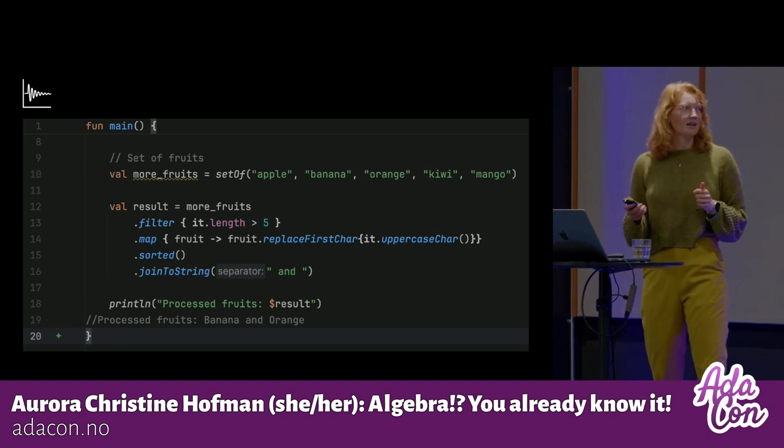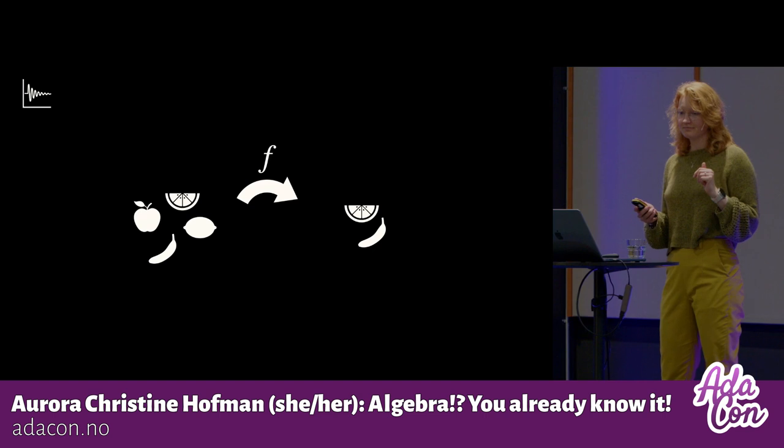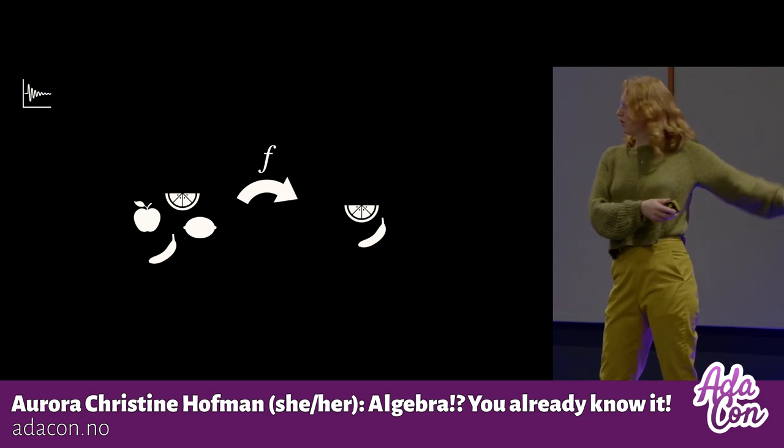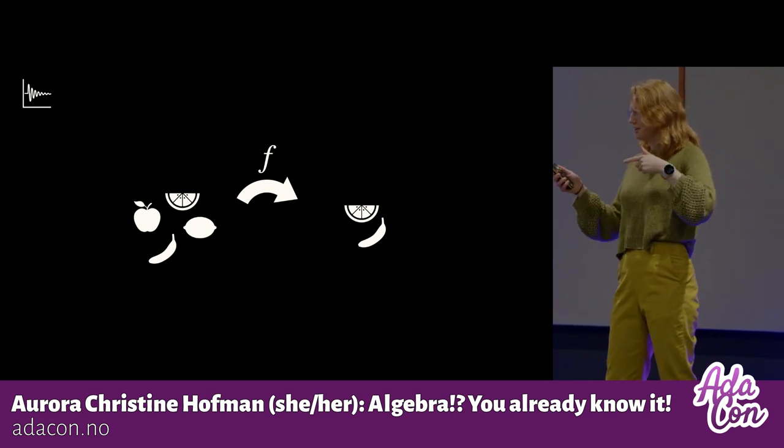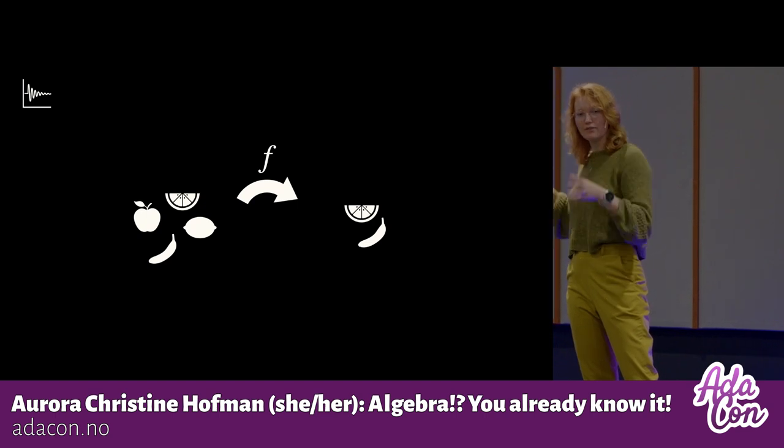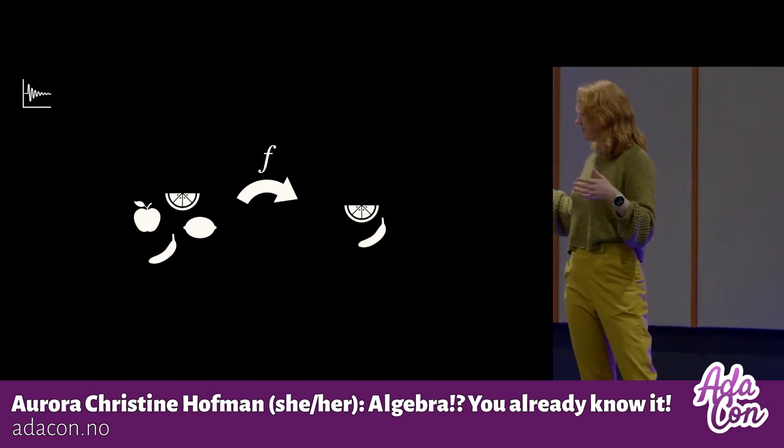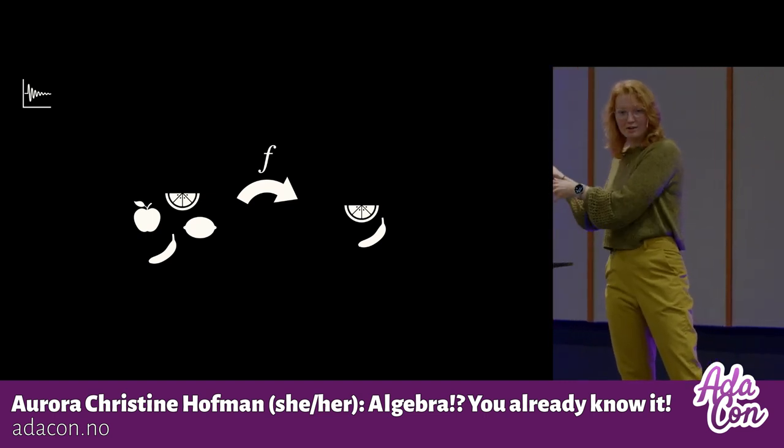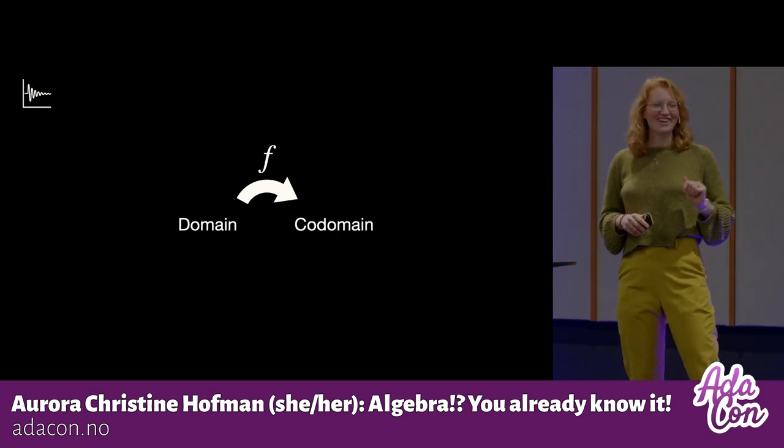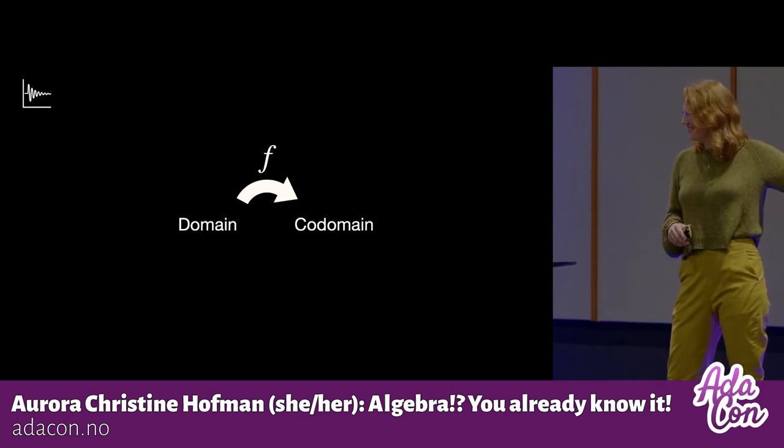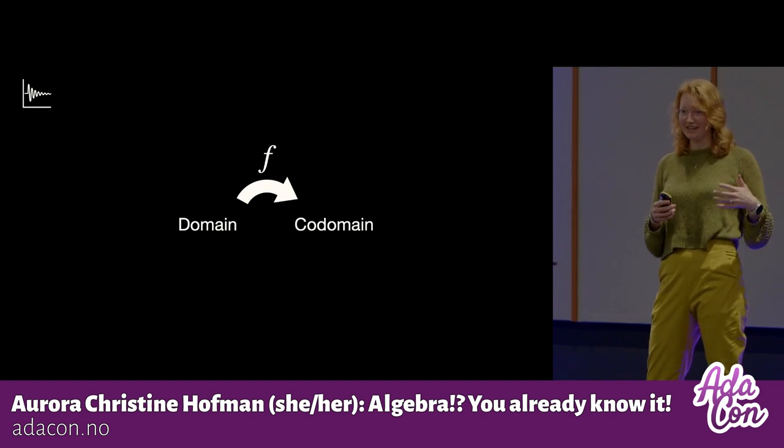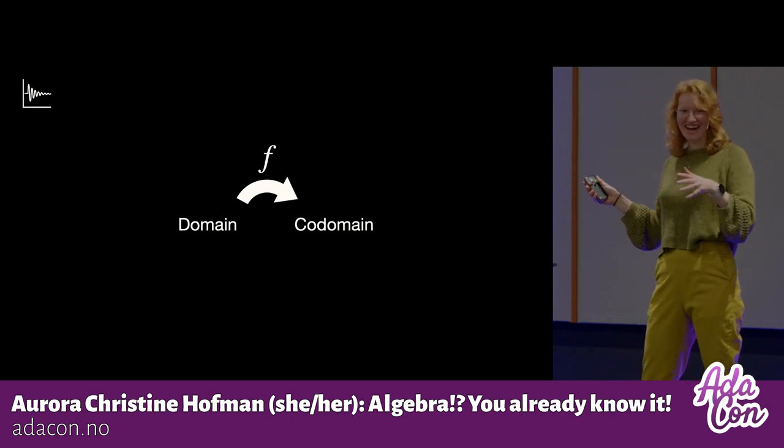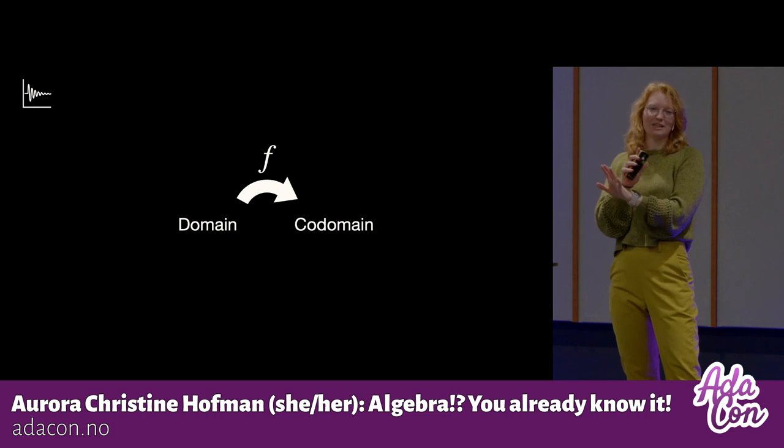All right. Let's focus on the filtering part. So what happens in my filter, I go from my sets of all the fruits, I apply my function, and I end up with the set of only fruits with letter lengths longer than five. All right. So I go from a set, my starting point to a set, my end point. Now, these have names. They're called my domain. That's where I start. That's where the input data lives to my codomain. That's where the output data lives. Okay. And these spaces can sometimes be the same space.